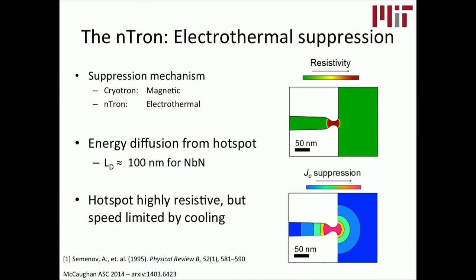The n-tron differs in that it creates an electrothermal effect to suppress superconductivity. And the way this works is if we drive a little bit too much current into a narrow channel that you can see here on the right, then we'll break down superconductivity in that narrow channel, and we'll end up with a small resistive normal region, a hot spot that's self-heating.